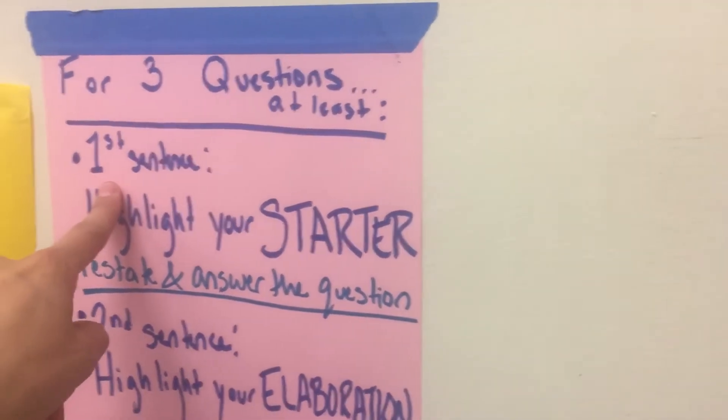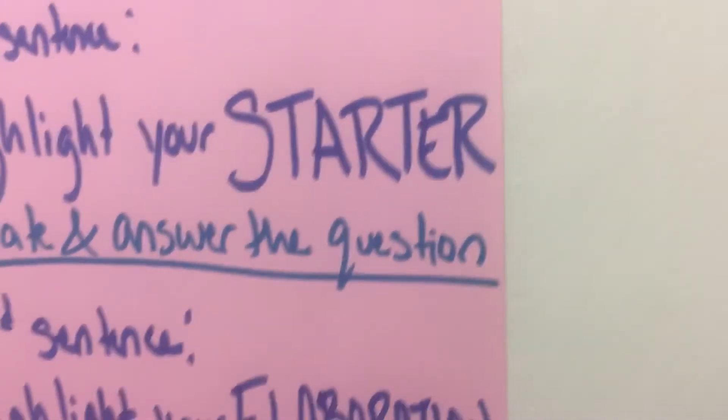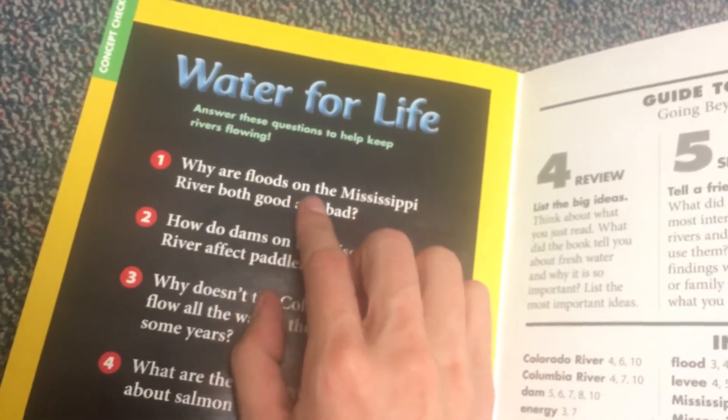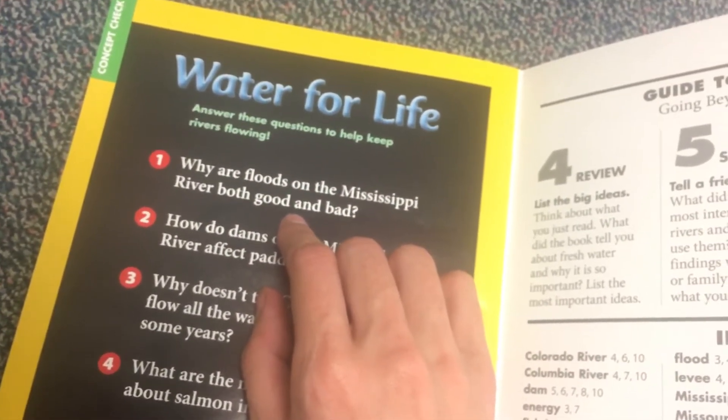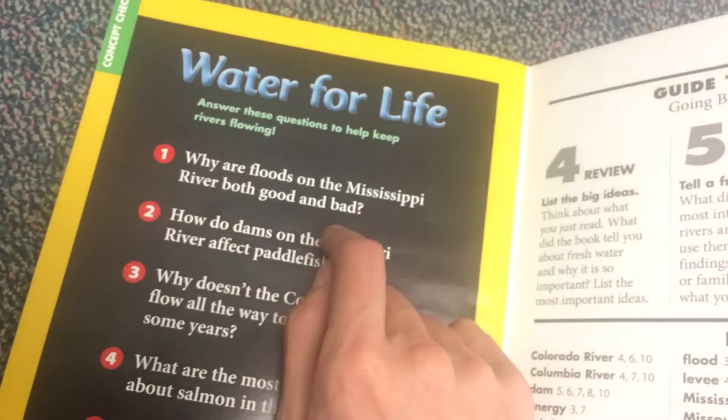That's what they want to do in the book. The first sentence — you highlight your starter. So 'Based on what I read,' and I would just put that down on a piece of paper — the only thing I have to give is lined paper. I'll write number one here: 'Based on what I read...' Now restate and answer the question. The question said, 'Why are floods on the Mississippi River both good and bad?' I would say, 'Based on what I read, floods on the Mississippi River are both good and bad because...' We really push the word 'because' a lot. Then we answer it using information from the text and paraphrasing.